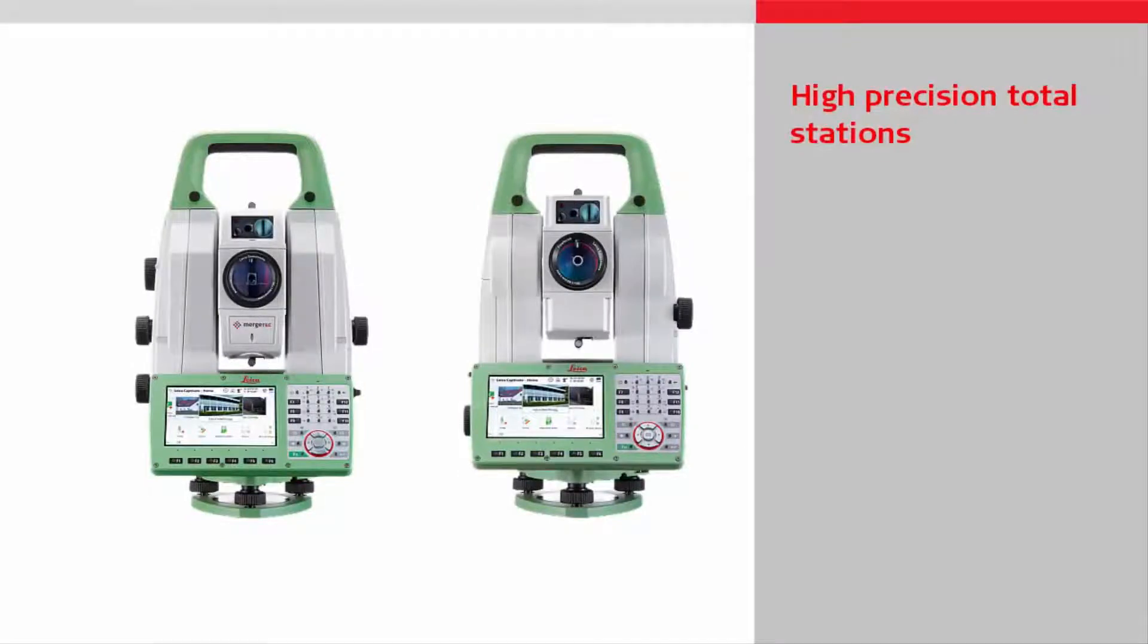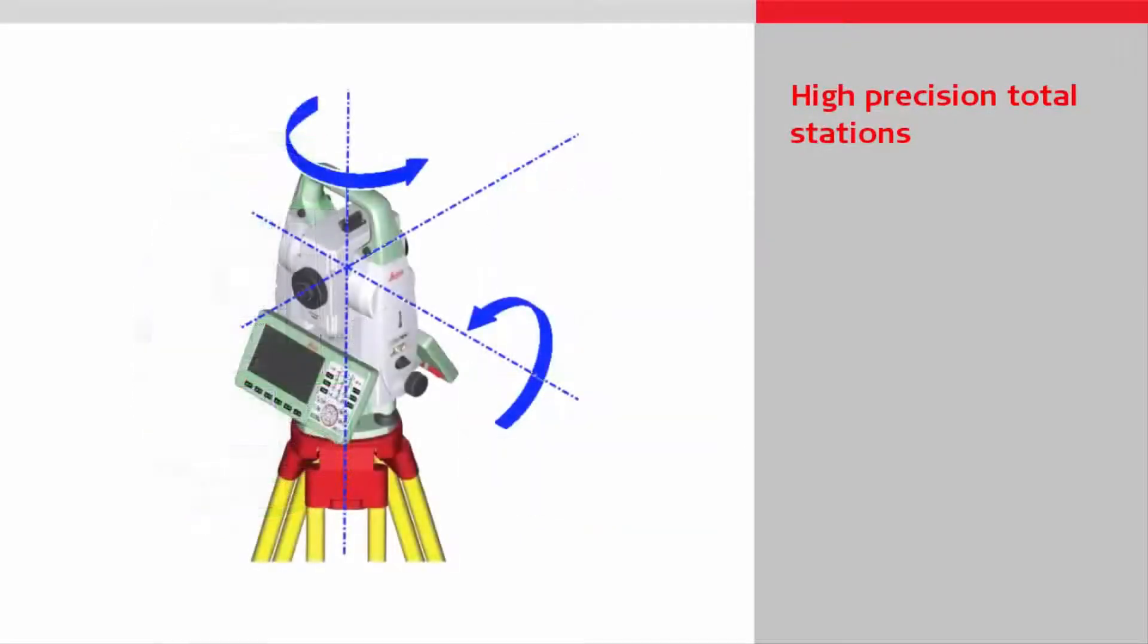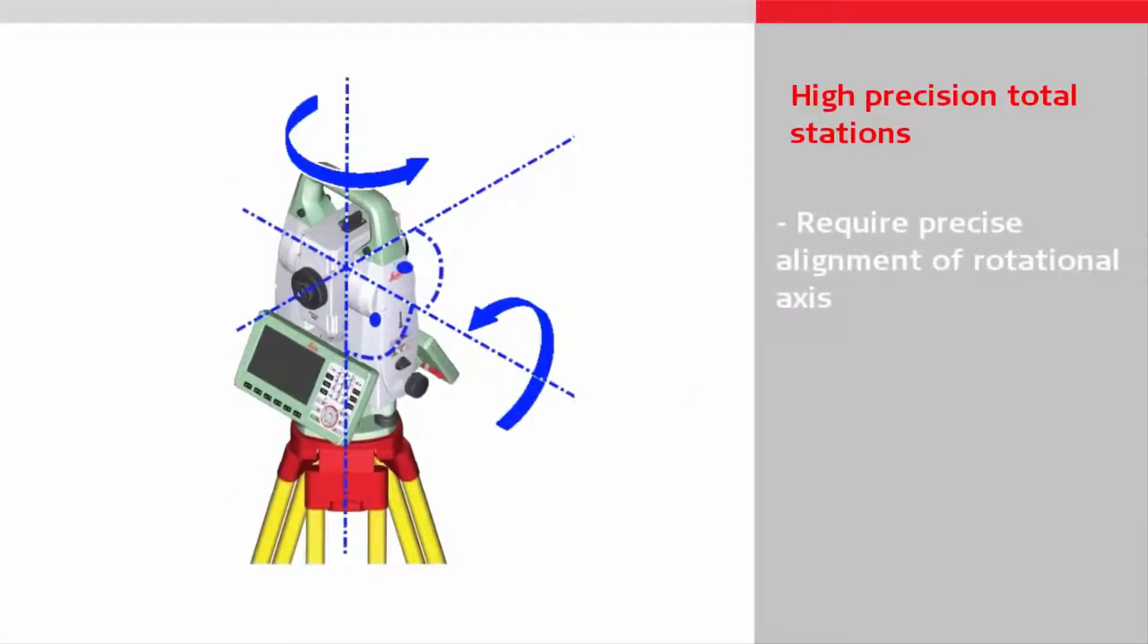To measure with high precision, total stations have to fulfill specific requirements of the rotational axis, in particular regarding the alignment of those axes.